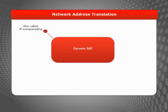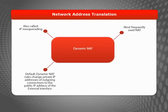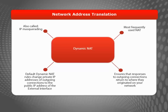Dynamic NAT, also known as IP masquerading, is the most frequently used type of NAT. By default, the firewall's dynamic NAT rules change the private source IP address of any outgoing connection to the public IP address of the external interface, so you might not even realize dynamic NAT is occurring. Dynamic NAT ensures that the responses to your users' outgoing connections return to where they originated on your network, making it perfect for outbound connections — but it won't help you when you want to make servers available for inbound connections from any internet user.